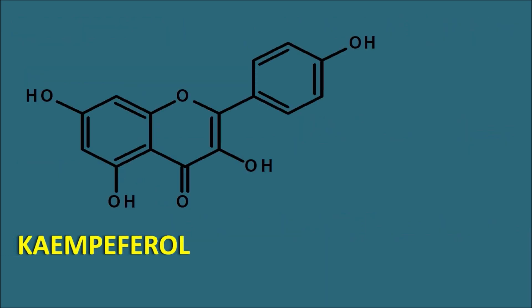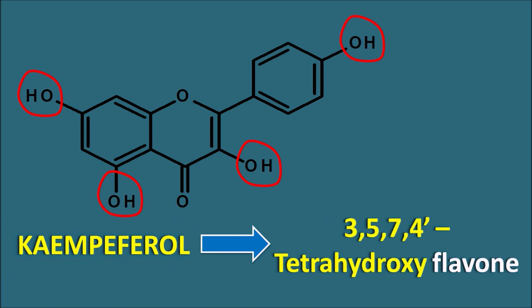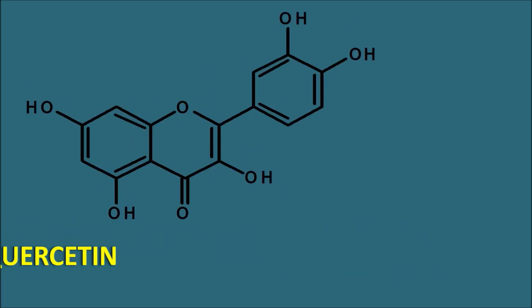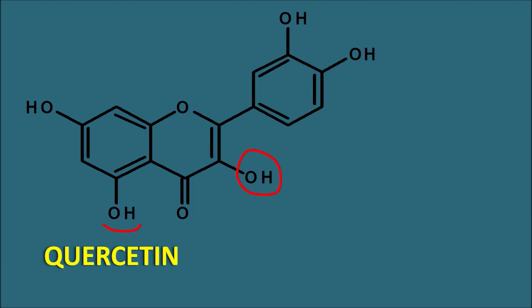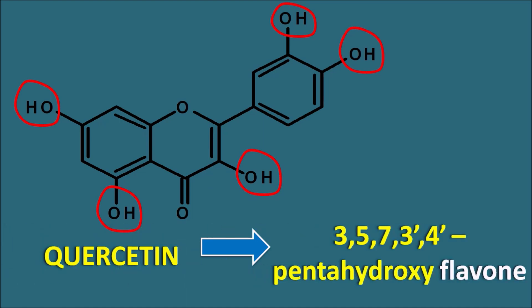Kaempferol has OH groups at the 3, 5, and 7 positions as well as the 4' position of the phenyl ring, making it 3,5,7,4'-tetrahydroxy flavonol. Quercetin has OH groups at the 3, 5, and 7 positions and at the 3' and 4' positions on the phenyl ring, making it 3,5,7,3',4'-pentahydroxy flavonol. Flavonols are derivatives of flavones with an extra OH group at the third position.